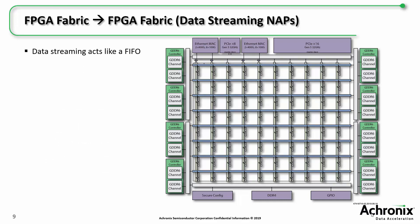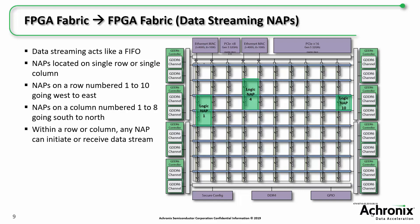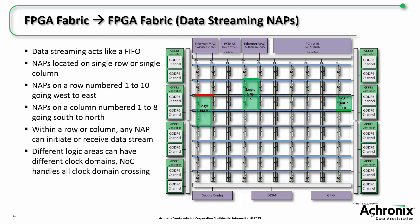Another way to communicate between NAPs is using data streaming. These act much like a FIFO. For data streaming, NAPs must be located on a single row or a single column. The NAPs can send or receive data, and each NAP is numbered along the row or column, with one starting at the west incrementing as you go east on a row, and one starting at the south incrementing as you go north on a column. Within a row or column, a data streaming NAP can send or receive data from any of the others. The NAP indicates the destination by sending the NAP number, and similarly the receiving NAP sees the NAP number that sent the data. Additionally, the different logic areas attached to different NAPs can use different clocks — the NOC handles all the clock domain crossing logic, making it easy to communicate between different blocks.